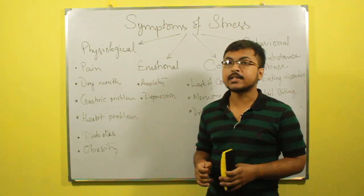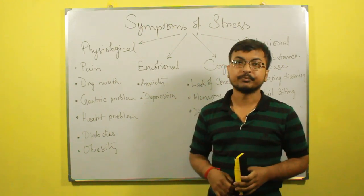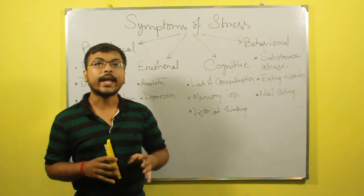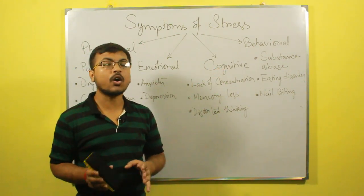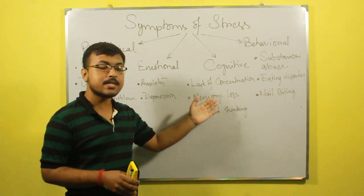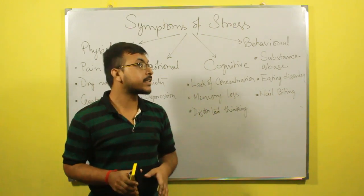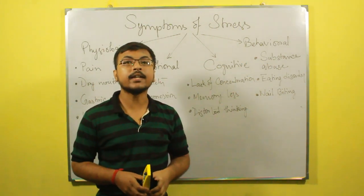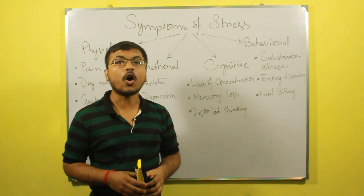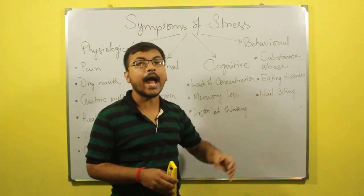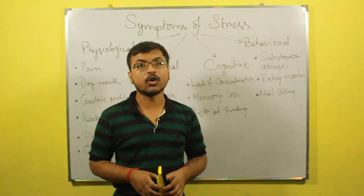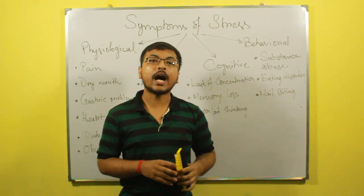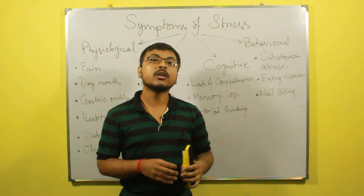Other physiological symptoms include diabetes and obesity. The next category of symptoms is emotional: stress can cause anxiety and depression. Under cognitive symptoms, stress causes lack of concentration, memory loss, and distorted or negative thinking. The last category is behavioural: stress can cause substance abuse such as smoking and consumption of alcohol. Eating disorders include three types — anorexia nervosa, bulimia, and binge eating disorder. Nail biting is also a behavioural symptom; it is an impulsive action. Stress can also affect our immune system and our performance level.